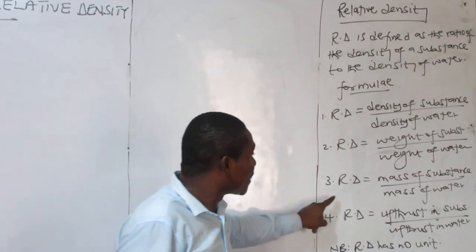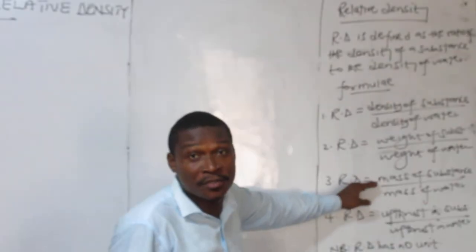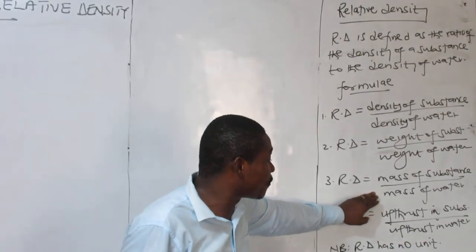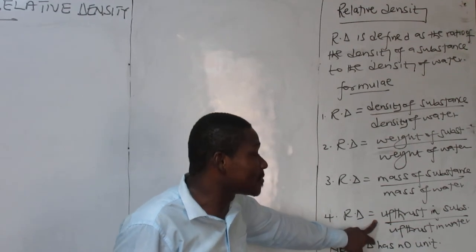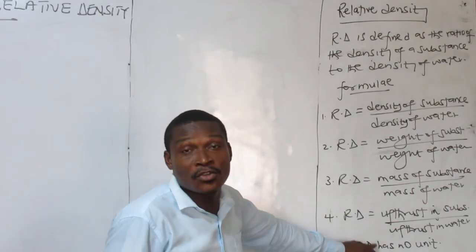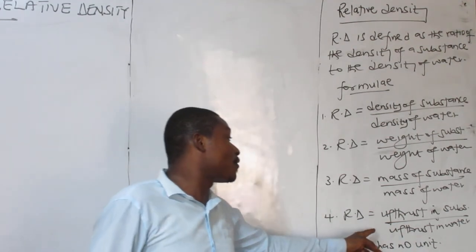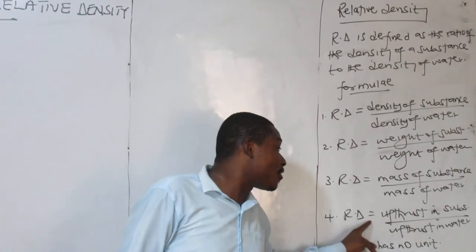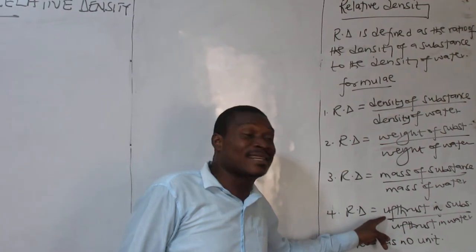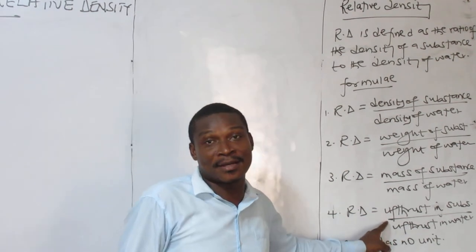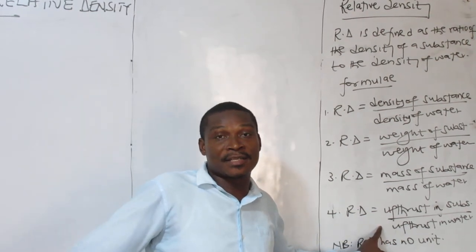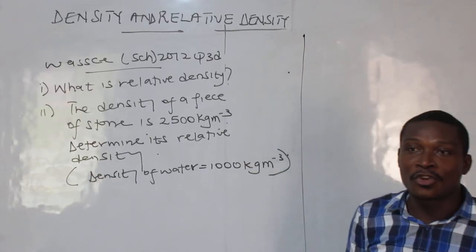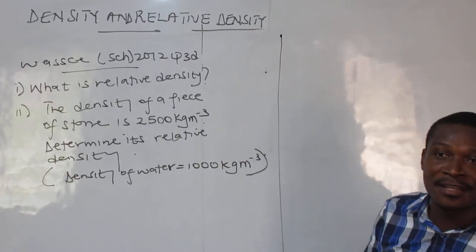Now if you have the masses you can also use this formula. Mass of substance over mass of water. Or upthrust in substance over upthrust in water. So we will look at questions where we have to use this formula. So the formula of upthrust linking relative density is this. As you can see. So we are going to look at the question just now on this. So you are welcome to the concept of relative density.